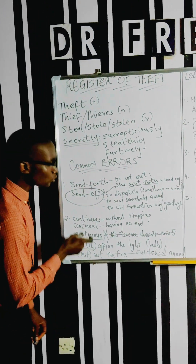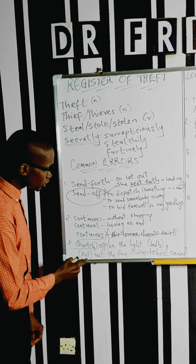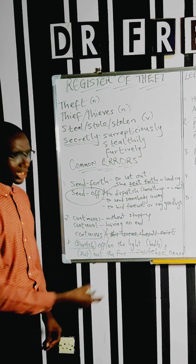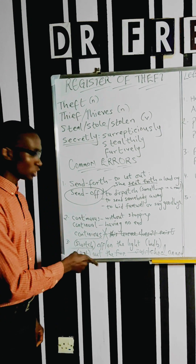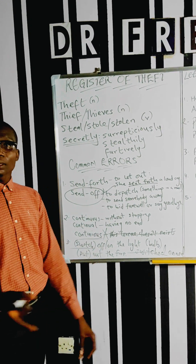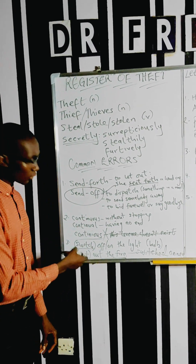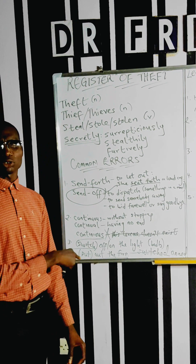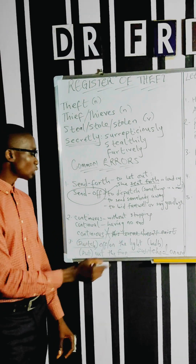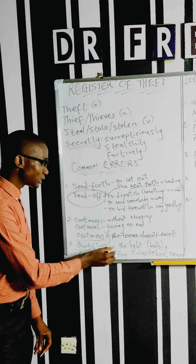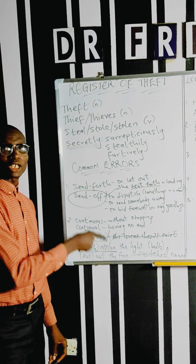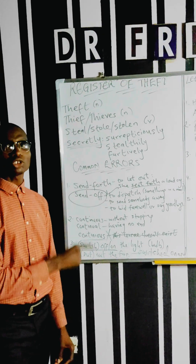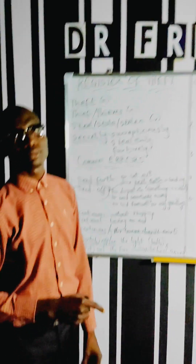You should not treat them as verbs. So you should say 'switched off,' 'switch on,' or 'put out.' Just the same way you cannot say 'out the lights,' it is wrong to say just 'off the lights' or 'on the lights.' People tend to make this kind of mistake a lot. Please, you don't on or off the light.